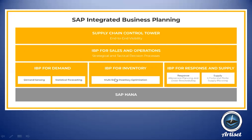Each module has its own license which you purchase from SAP. The basic one is IBP for Sales and Operations. When you buy this, you get some demand and some supply functionalities — not all. For example, you get some forecasting algorithms but not demand sensing, which is short-term weekly-level forecasting. For full-fledged demand planning you must also opt for the Demand license. Similarly, basic supply heuristics are included in Sales and Operations, but for full-fledged supply planning — including allocation planning, order rescheduling, finite and infinite supply plans — you need the Response and Supply Planning license.